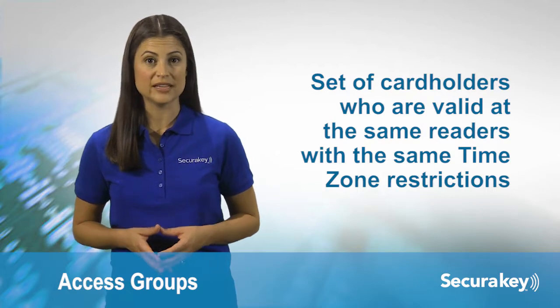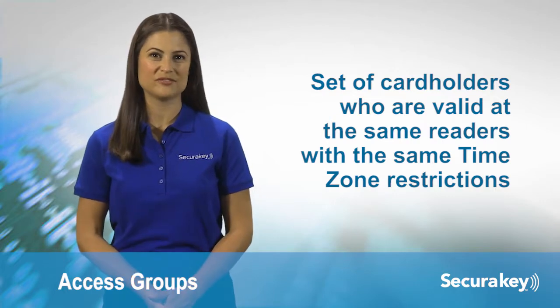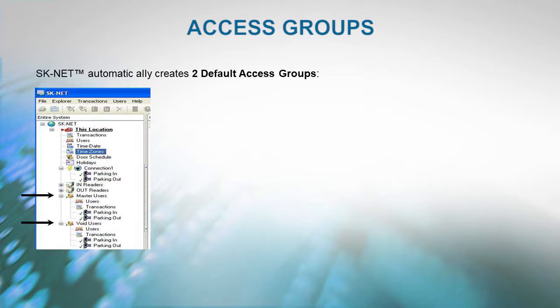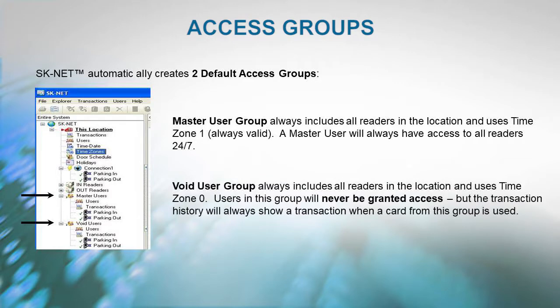An Access Group is a set of cardholders who are valid at the same readers and have the same time zone restrictions. Groups are ideal for multi-departmental facilities with different time schedules. SKNet automatically creates two default access groups: the Master User Group, which always includes all readers and uses Time Zone 1 (always valid), giving 24/7 access; and the Void User Group, which uses Time Zone 0, never granting access but always logging a transaction when a card is used.